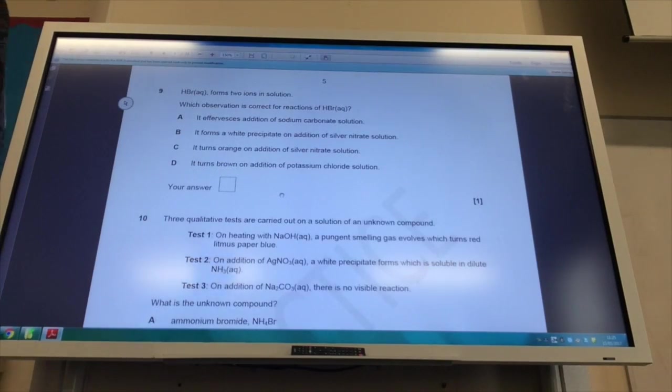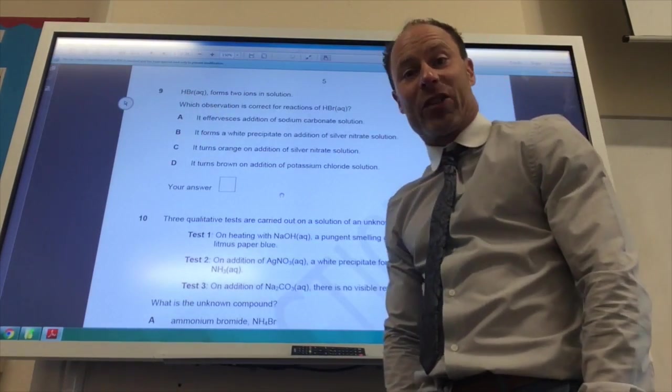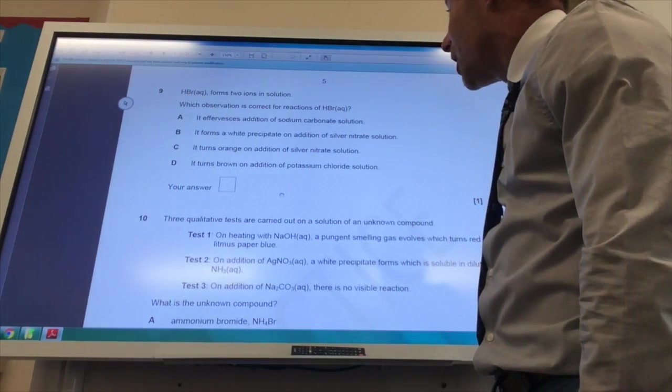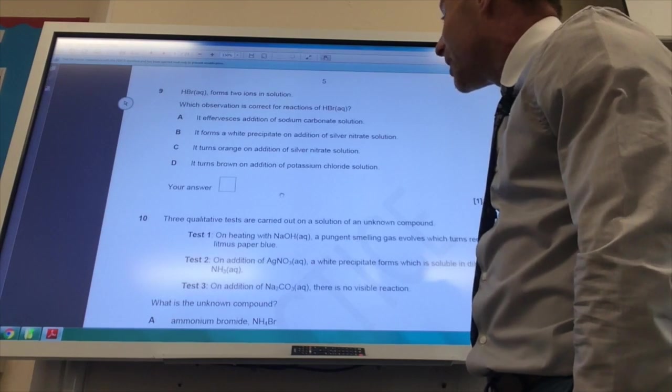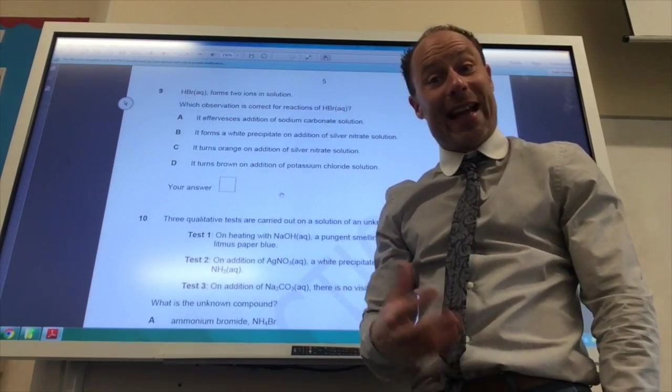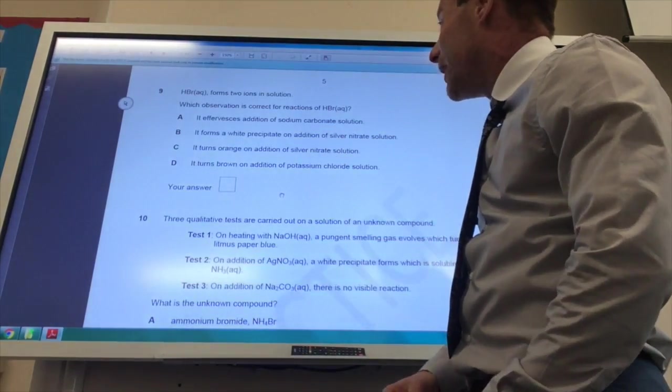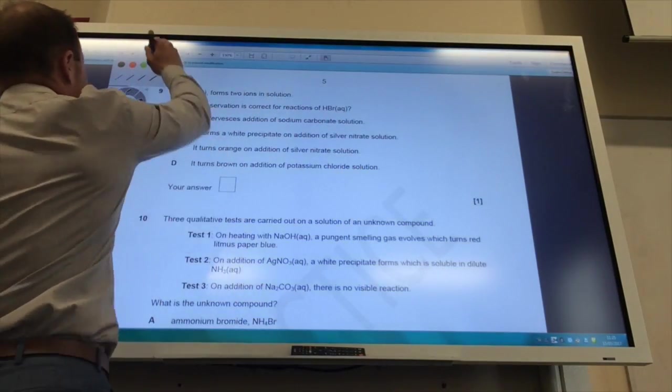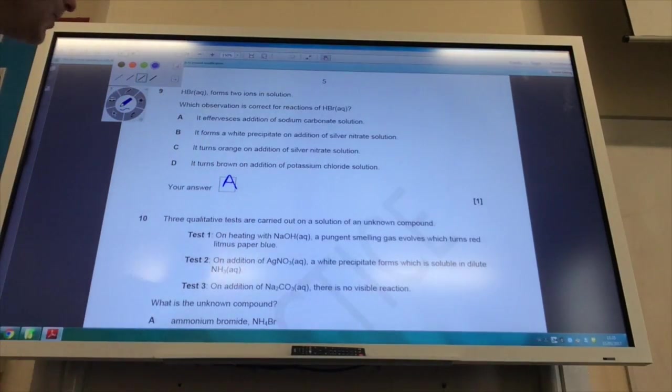HBr aqueous forms two ions in solution. Which observation is correct for the reactions of hydrogen bromide? It effervesces with the addition of sodium carbonate solution. Yep, that's going to be correct because HBr is going to be acidic. It's going to be like HCl, hydrochloric acid. An acid does react with sodium carbonate solution to give me carbon dioxide gas. So the answer is 9A.